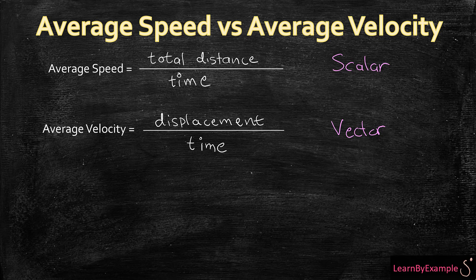An average speed is a scalar quantity and an average velocity is a vector quantity. A scalar quantity does not have any direction, and vector quantities include both magnitude and direction. As I've written here, the average speed is the total distance over time, and the average velocity is the displacement over time.